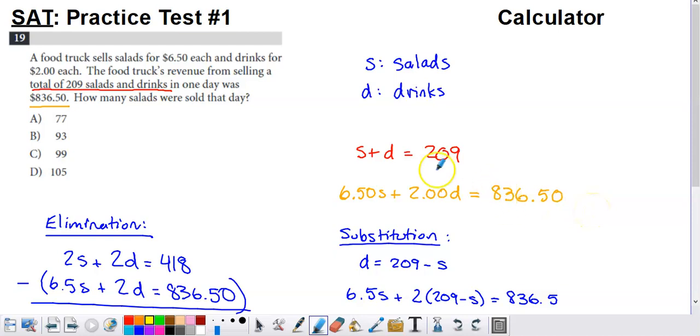So these two equations form a system, and what we would like to do is we would like to solve this system. Now, the way that I personally like to solve one of these is look at the wording. It says how many salads were sold. We don't necessarily need to determine how many drinks are sold. So I read that, and I think,